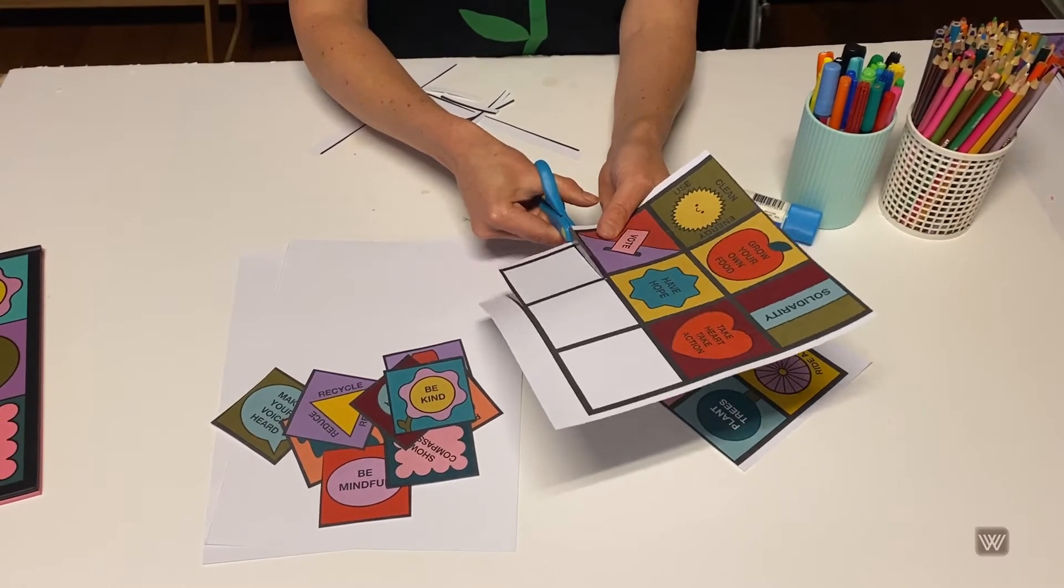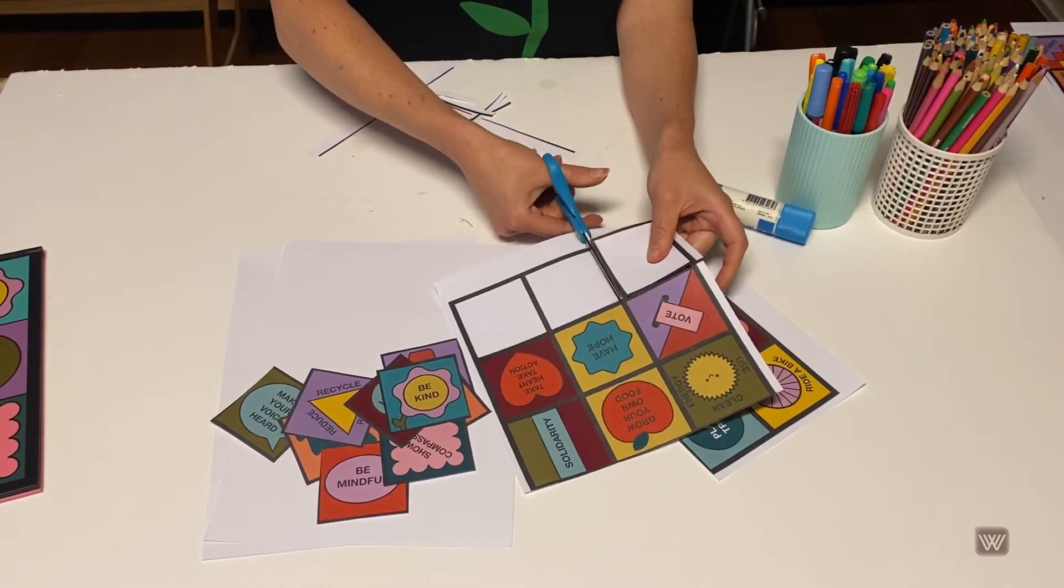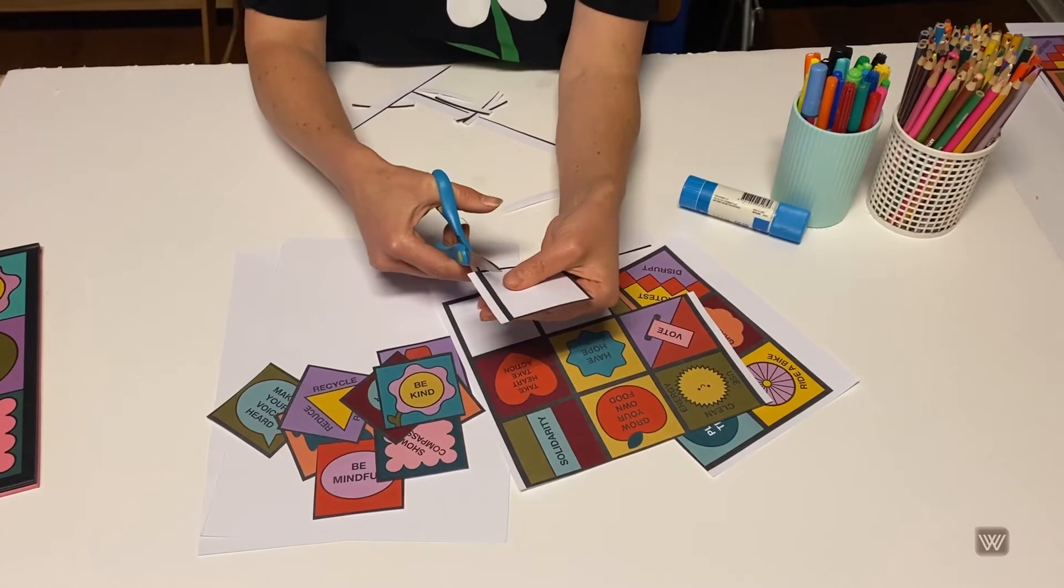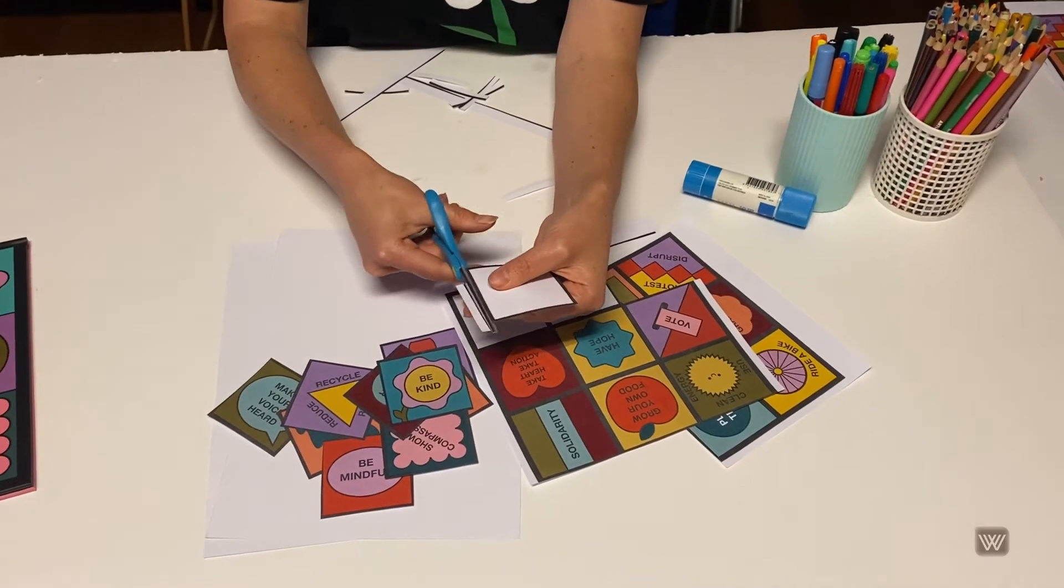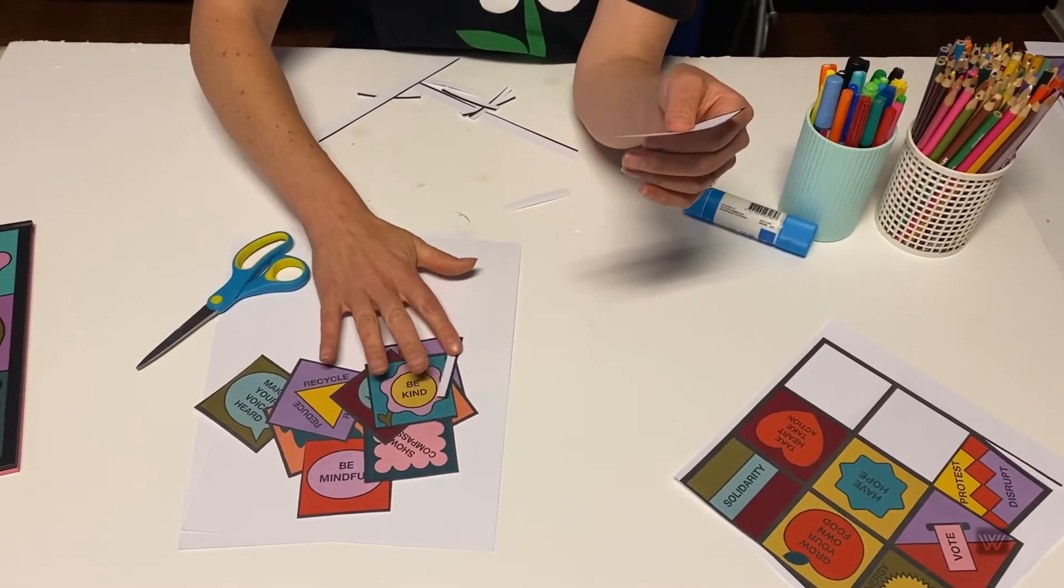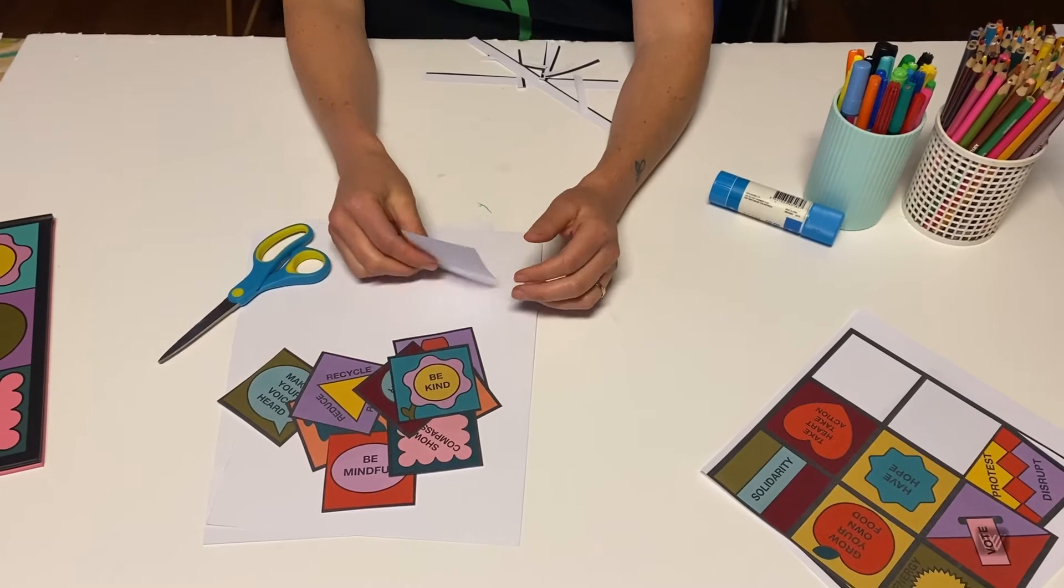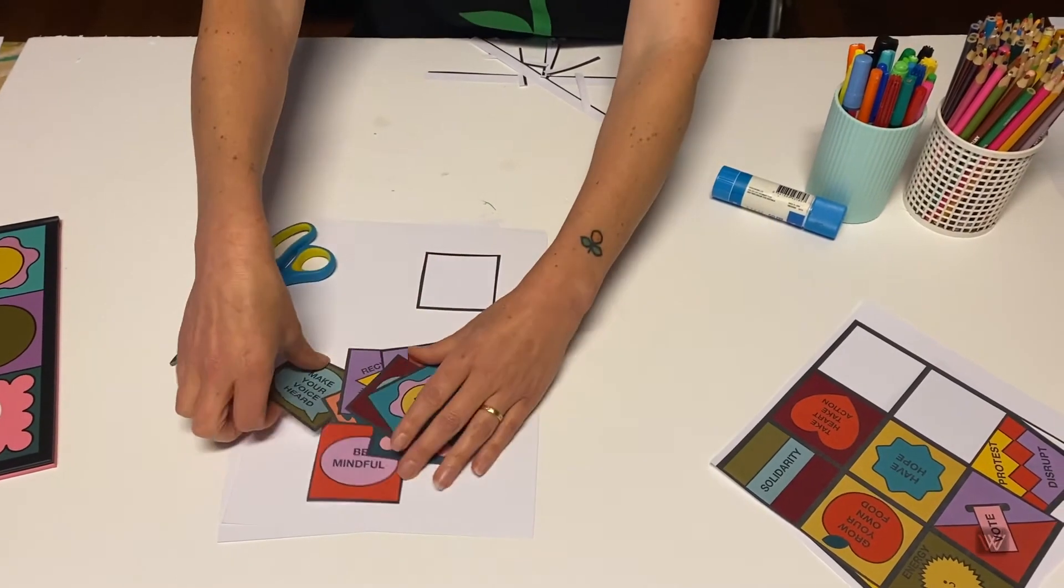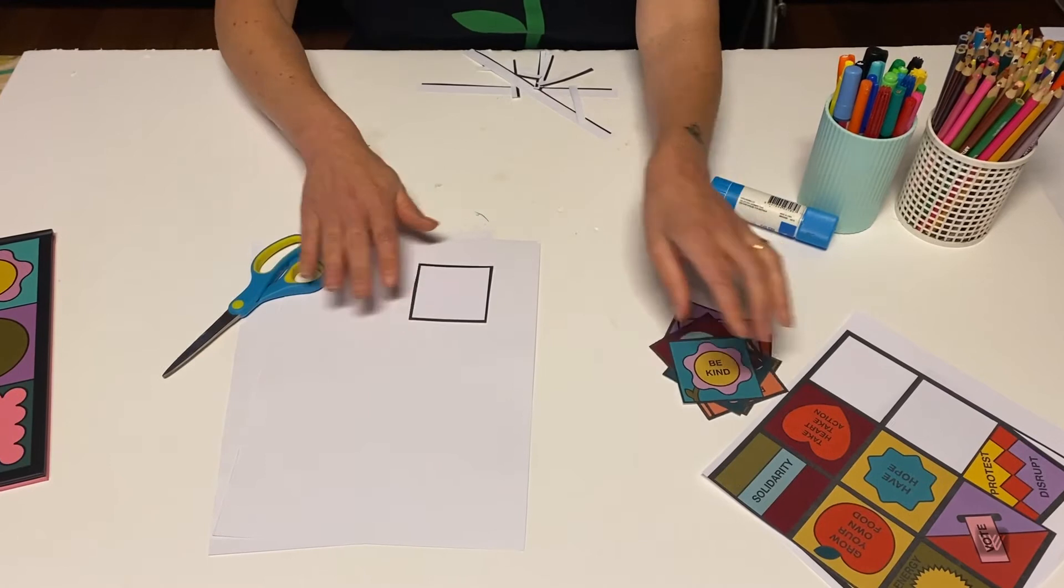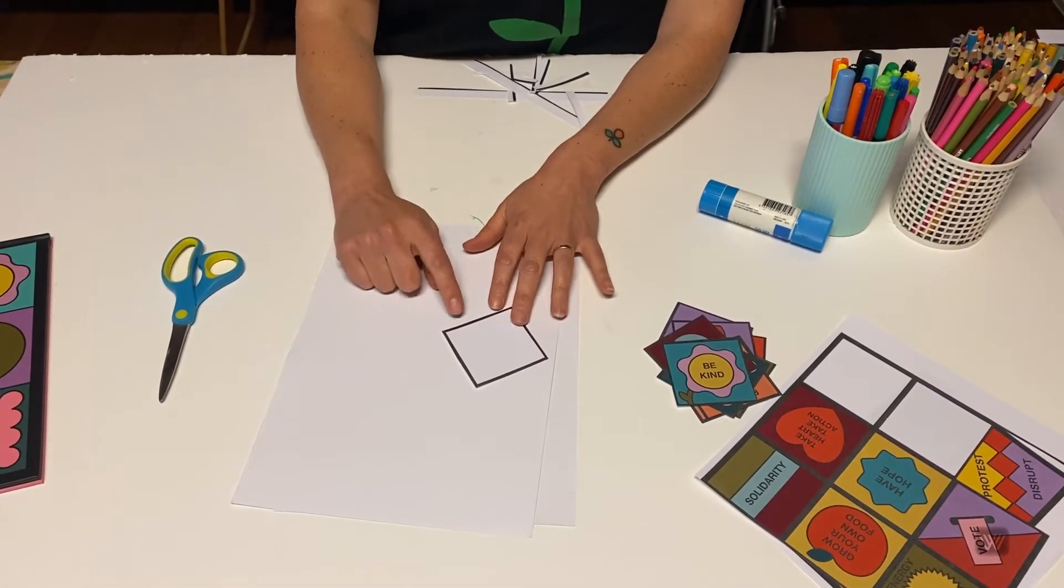So when you're making your own, you might like to think about things that are important to you. So the environment or your community or your school or your family and things which you can do to make things better for those things.